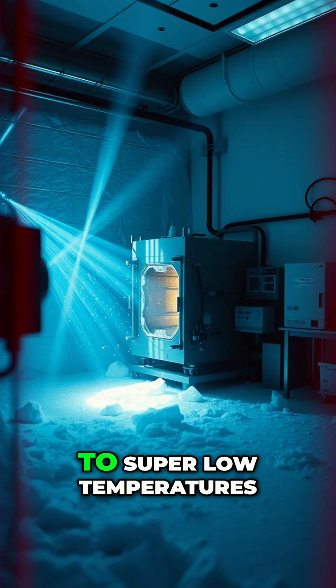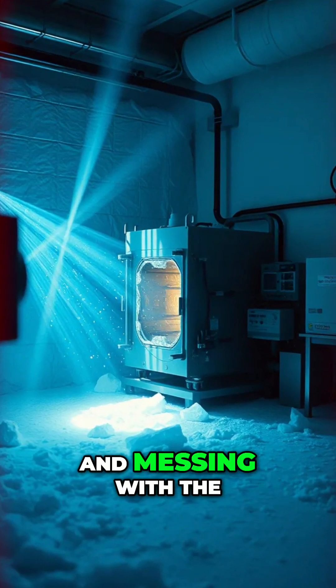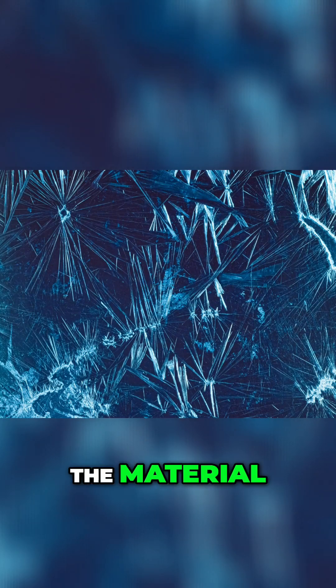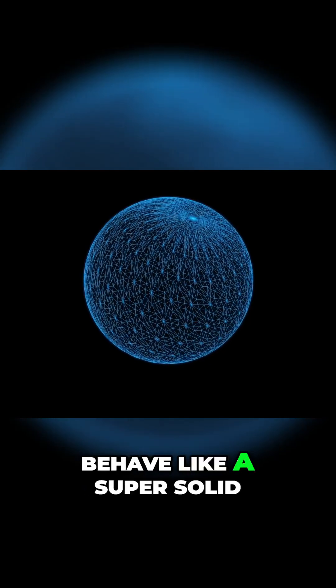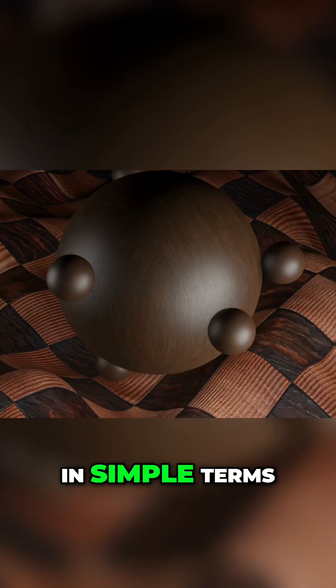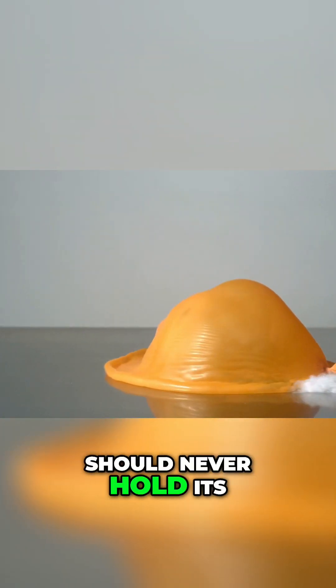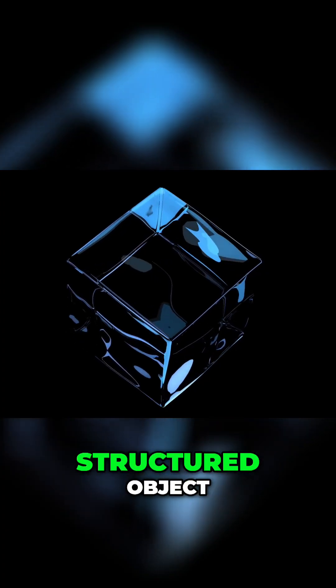By cooling everything down to super low temperatures and messing with the way photons interacted with the material, they got them to behave like a super solid. In simple terms, they took something that should never hold its shape and forced it to act like a structured object.